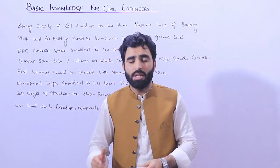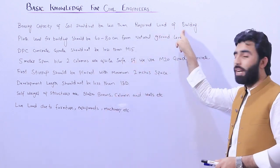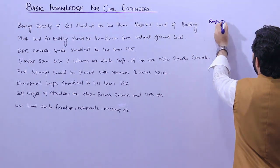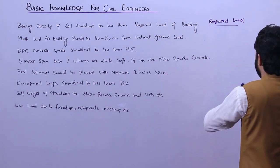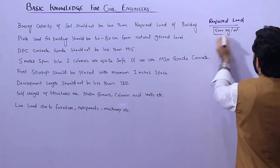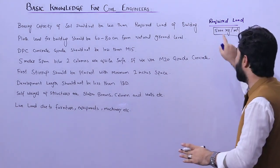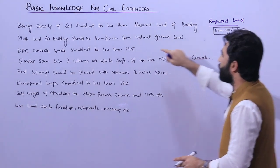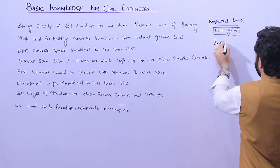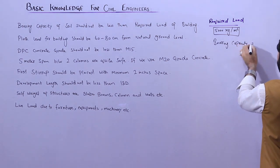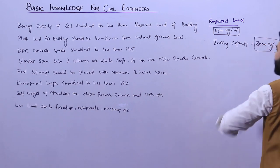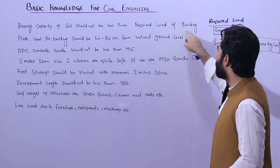The bearing capacity should be equal to or greater than the structure load or the required load of the building. For example, if the required load of the building is 5,000 kg per meter square, the bearing capacity of the soil should not be less than this — it should be more, for example 8,000 kg per meter square. So the bearing capacity of the site should not be less than the required load of the building.